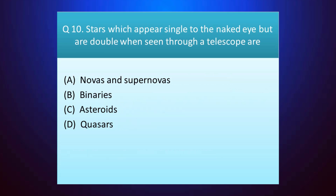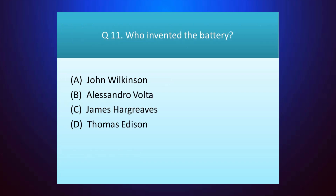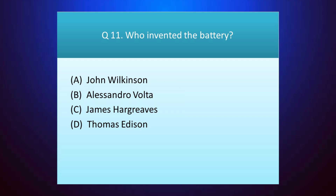Question number ten: stars which appear single to the naked eye but are double when seen through the telescope are — your time starts. The answer is option B — binaries. Question number eleven: who invented the battery? Your time starts. The answer is option B — Alessandro Volta.